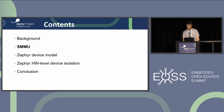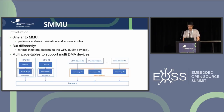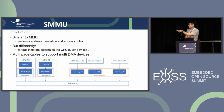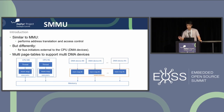Next I will briefly introduce the SMMU. Similar to MMU, the SMMU also performs address translation and access control, but differently: MMU translates addresses from the CPU, while SMMU translates addresses for DMA devices. A platform typically supports multiple DMA devices, so SMMU also needs to support multiple translation tables — each DMA device needs a translation table. SMMU performs translation for each device separately.